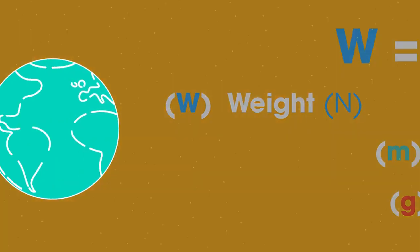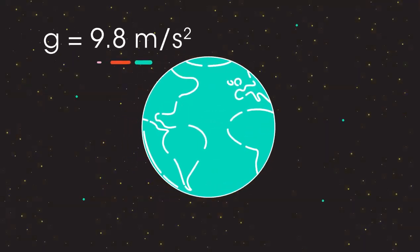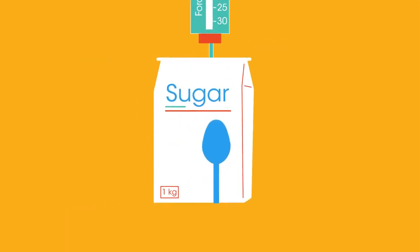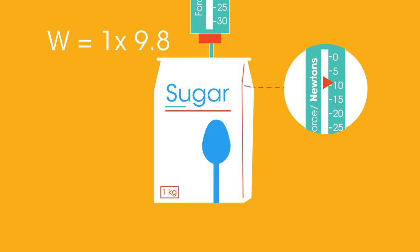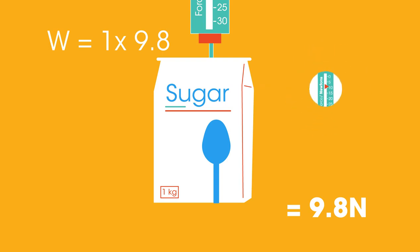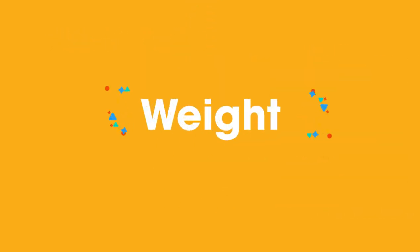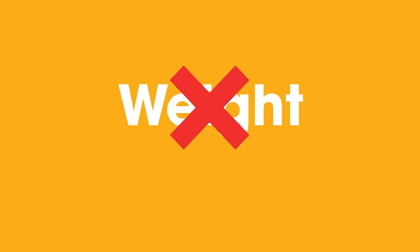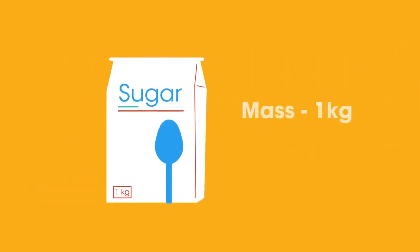Weight in newtons. On Earth, g equals 9.8 meters per second per second, so the weight of the 1 kilogram bag of sugar is 1 times 9.8, which equals 9.8 newtons. As the picture shows, often in everyday life we use the word weight when in fact we mean mass. The bag of sugar has a mass of one kilogram but a weight of 9.8 newtons.